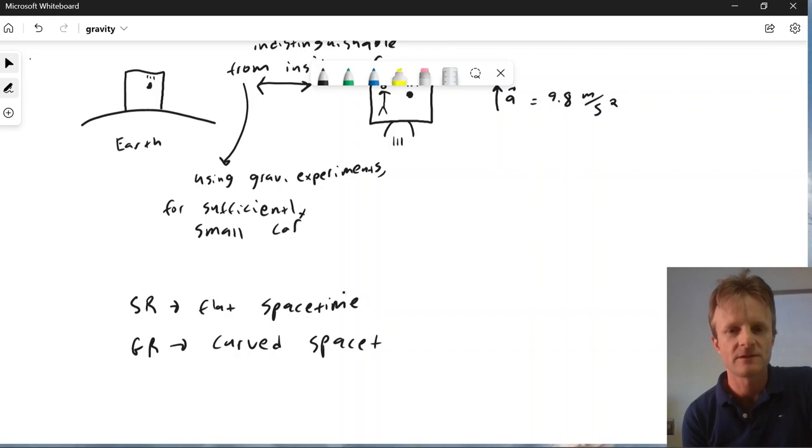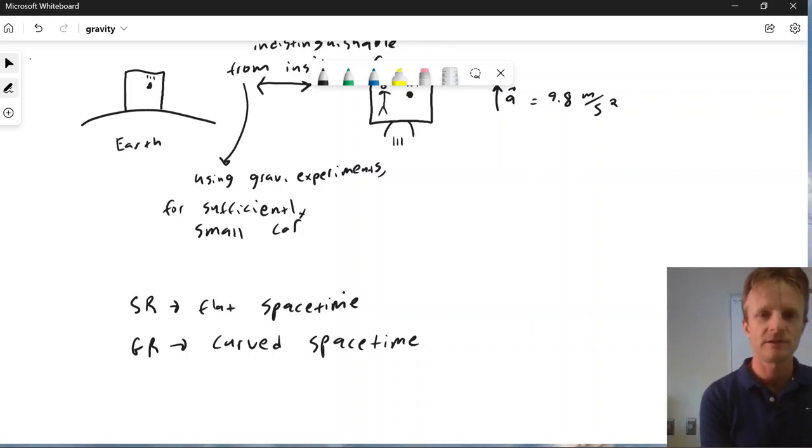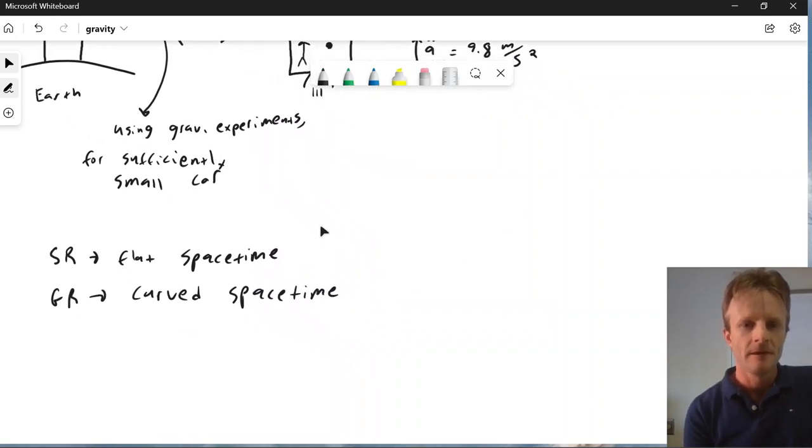So if special relativity is flat space-time, then general relativity ought to be curved space-time. Now, what is curved space-time? Well, we'll have to talk about that and we'll see that there's an analogy between what you think of as curvature in space and space-time curvature, which is extremely precise mathematically. But it's so analogous mathematically that curvature is clearly the right word to use.